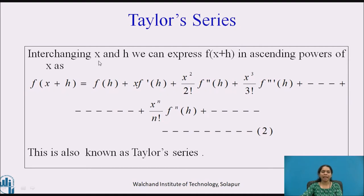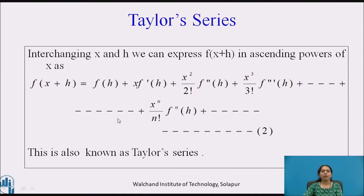Now, interchanging x and h, we can express f(x+h) in ascending powers of x as: f(x+h) = f(h) + x·f'(h) + (x²/2!)·f''(h) + (x³/3!)·f'''(h) + ... and the nth term is x^n / n! times the nth derivative of f at h, and so on. This is Representation 2, also known as Taylor series.